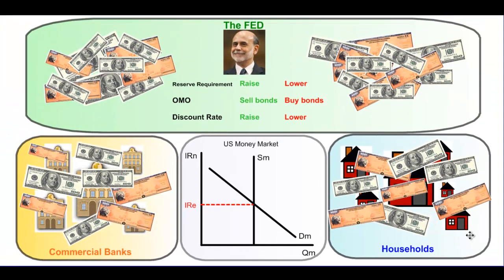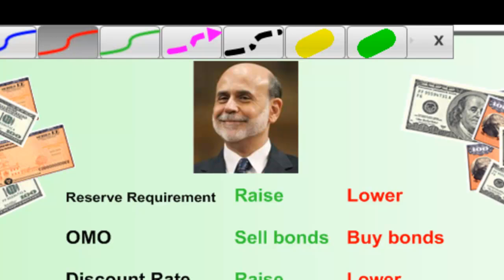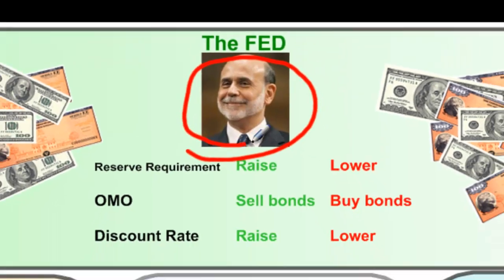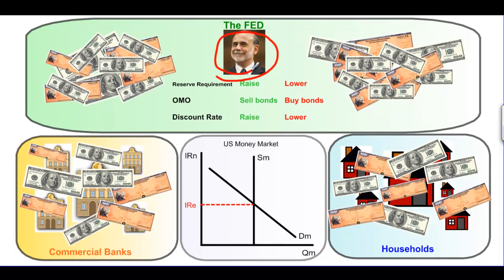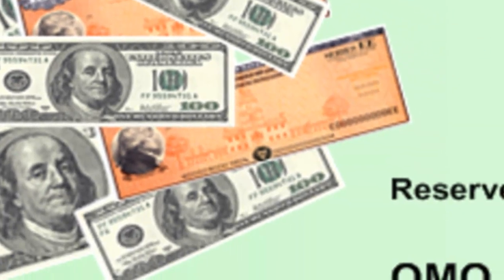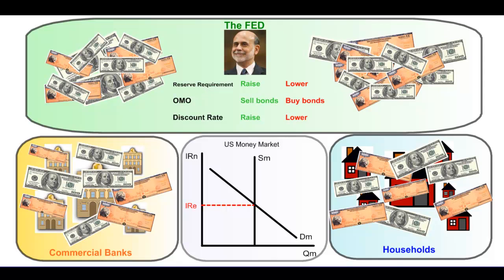In this illustration, we have the United States Federal Reserve, represented by chairman Ben Bernanke. The Federal Reserve is the entire green box at the top of the screen. Within the Federal Reserve system, we have money represented by $100 bills and US government bonds represented by an orange bond certificate. Government bonds play a very important role in monetary policy, as we'll see when we discuss OMO, or open market operations.